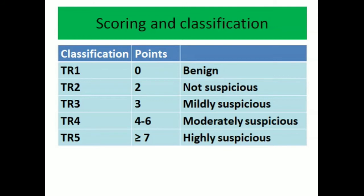For scoring and classification, there are five classes: TR1, TR2, TR3, TR4, and TR5. TR1 has a cumulative score of zero and is definitively benign. If the total points are two, the lesion is TR2 and not suspicious for malignancy. If the points are three, it will be classified as TR3 and is mildly suspicious for malignancy.